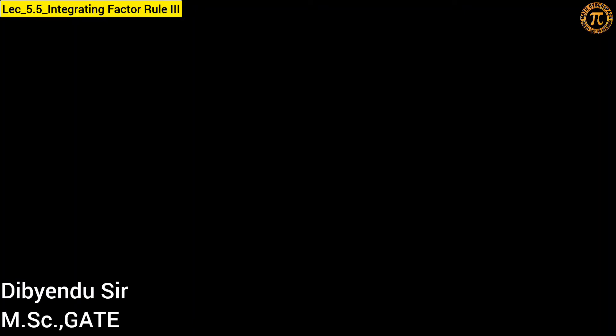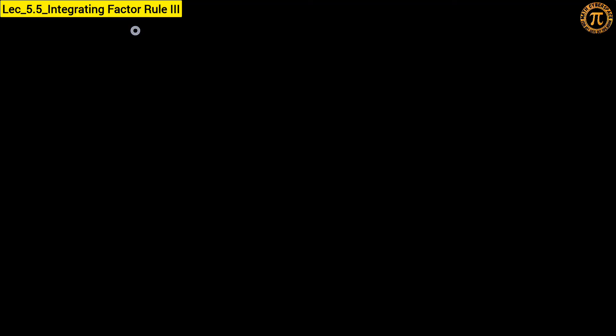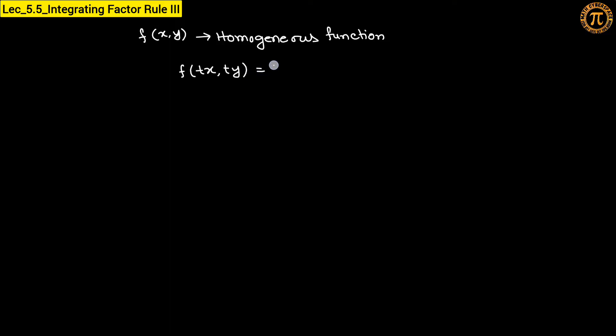Hello everyone, this is lecture number 5 and today's topic is Integrating Factor Rule Number 3. Before starting Rule 3, let me review what a homogeneous function is. Suppose we have a function f of x comma y. This function is called a homogeneous function if it satisfies the condition that f of tx comma ty equals t to the power n times f of x comma y.